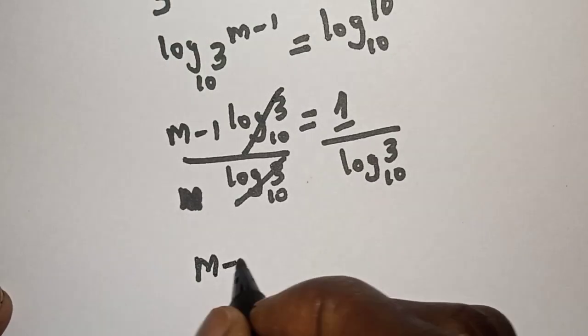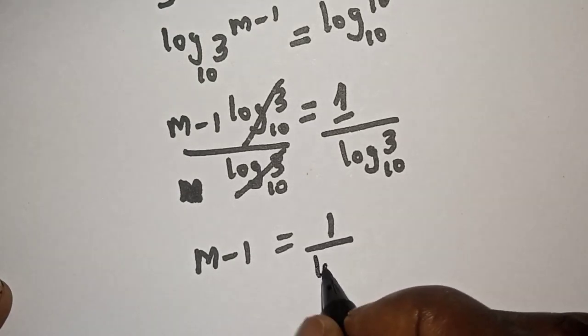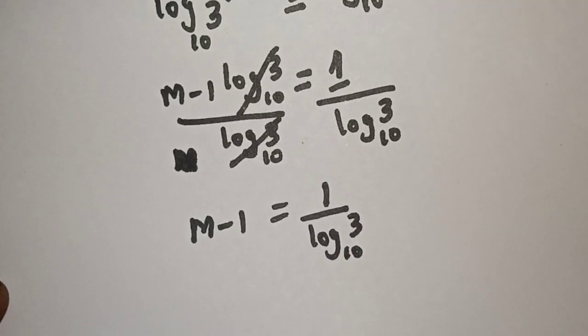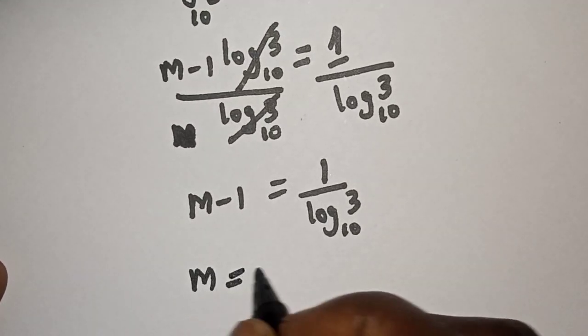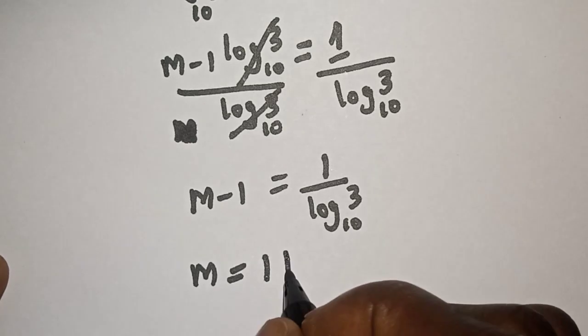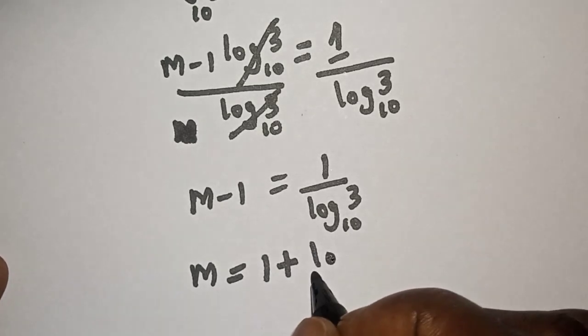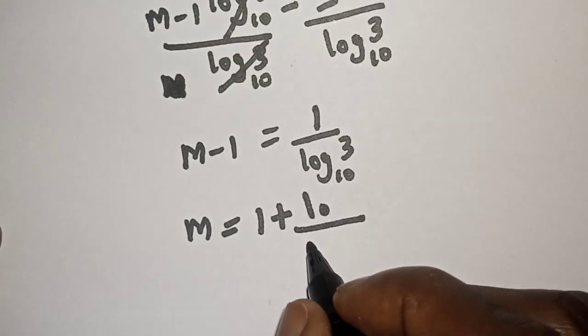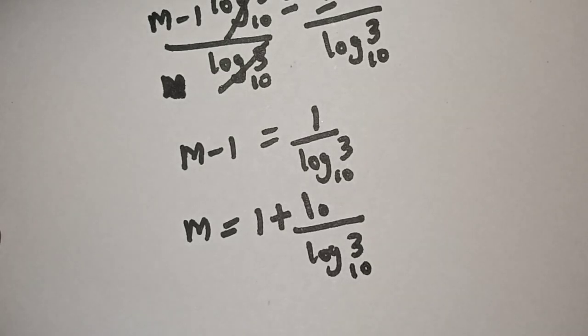We have m minus 1 is equal to 1 over log 3 base 10. Then we are looking for the value of m. m is equal to 1 plus 1 over log 3 base 10.